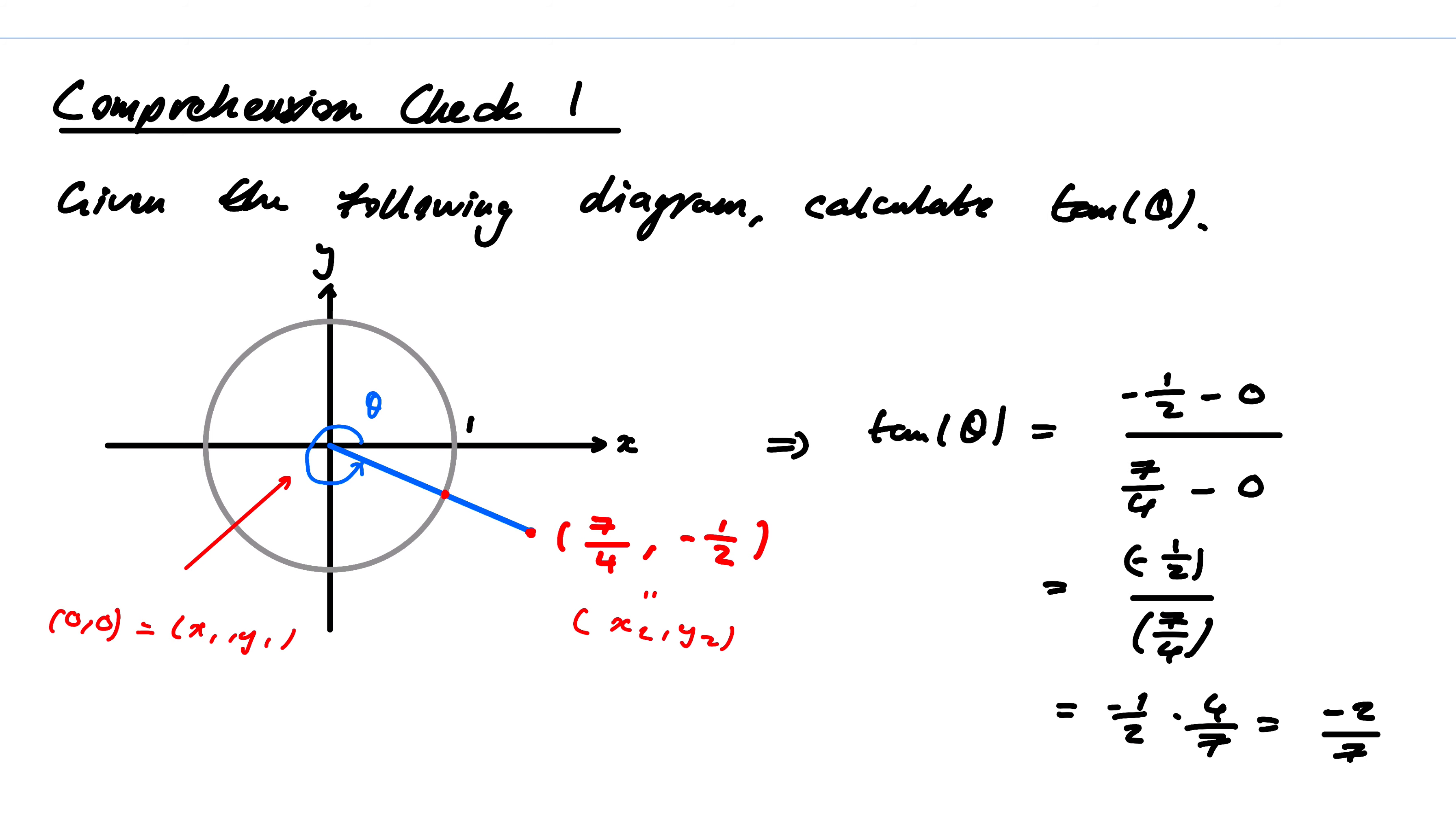So that's tangent of this theta. A really clever way of interpreting tangent using the slope, and we're able to calculate it because we have two points on this line.